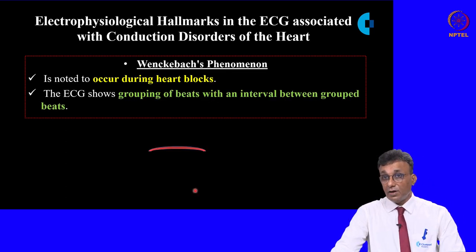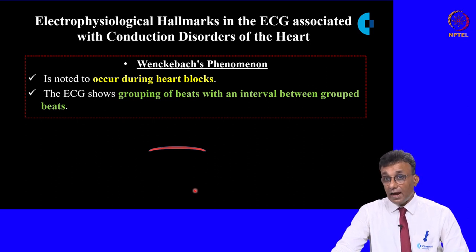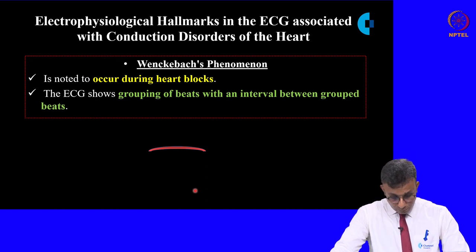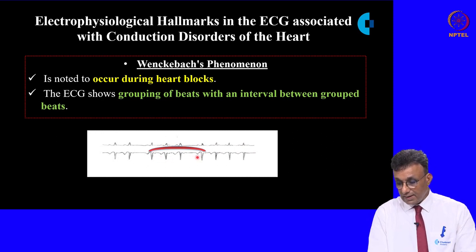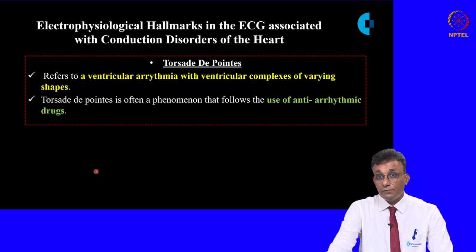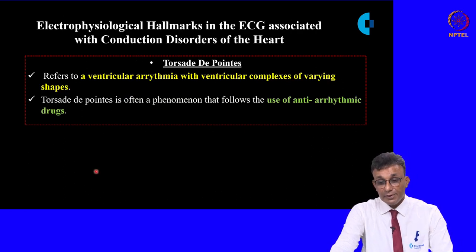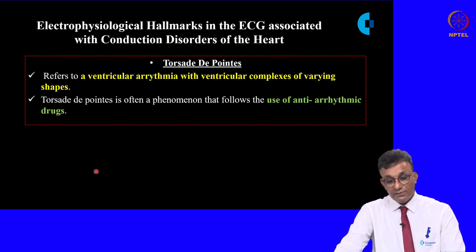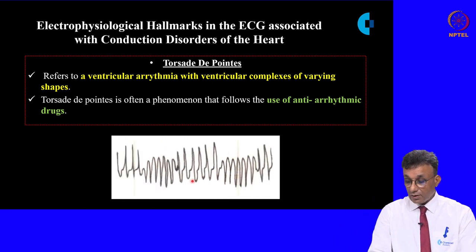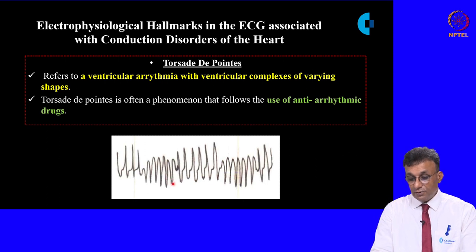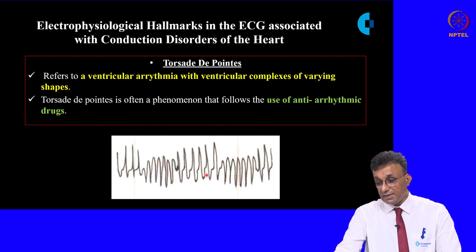Wenckebach's phenomenon commonly occurs during heart blocks, involving grouping of beats with an interval between the grouped beats. This tracing shows three beats with an interval followed by grouping again. The last electrophysiological abnormality is Torsades de Pointes, a ventricular arrhythmia with ventricular complexes of varying shapes. This electrophysiological disturbance is usually seen following the use of anti-arrhythmic drugs, as shown in this tracing.